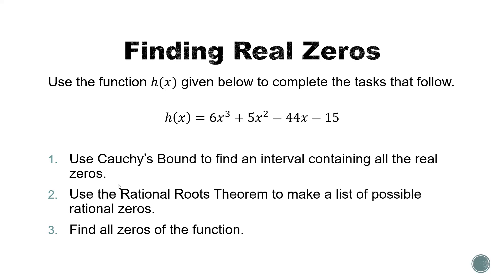This is kind of a three-step process as you see here on the slide. The first thing we're going to do is use what's called Cauchy's bound to find an interval that all of those real zeros should fall in. Then we'll use the rational roots theorem to make a list of possible zeros — candidates for our zeros. And then finally with that information we'll find all of the zeros.